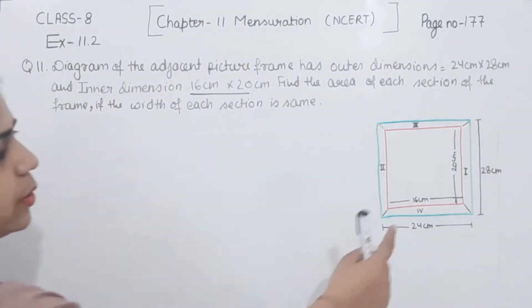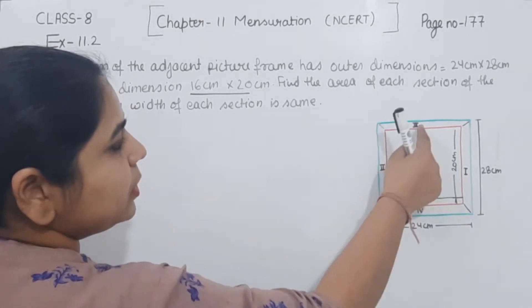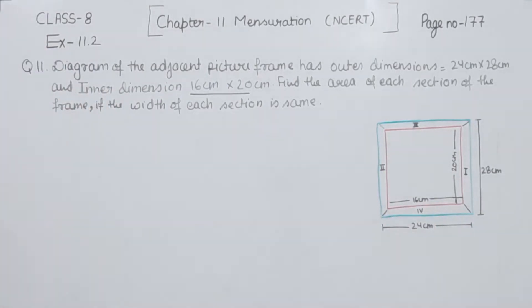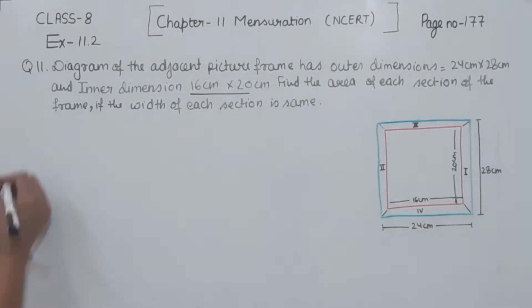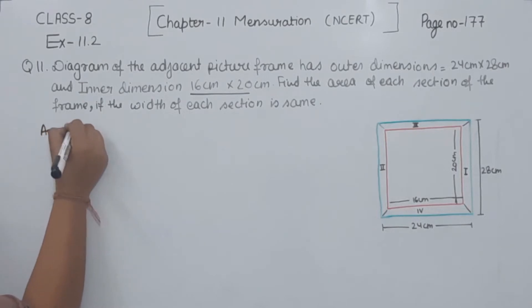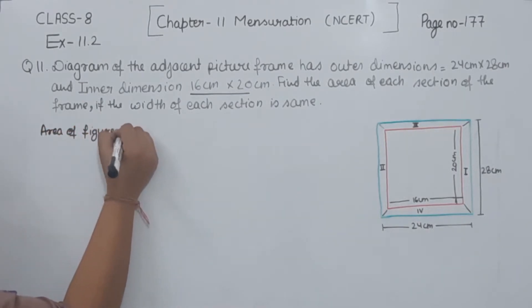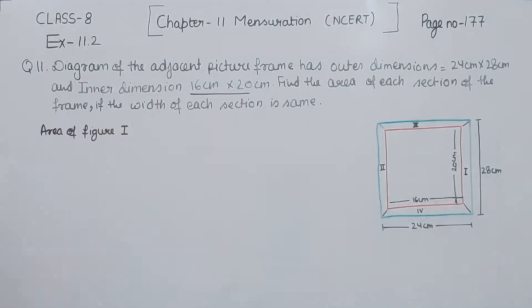So we are having 4 sections: 1, 2, 3, and 4. First of all, we are going to find the area of the first section. So I am going to write here: area of figure 1. This one we are having is a trapezium.